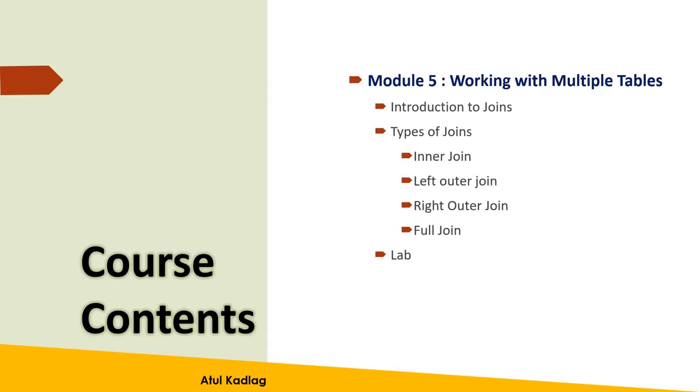The last module will be covering the relationship between different tables or what are the different joins we need and the types of joins like inner join, left outer join, right outer join, full join, and all those things. These are the things we're going to cover.